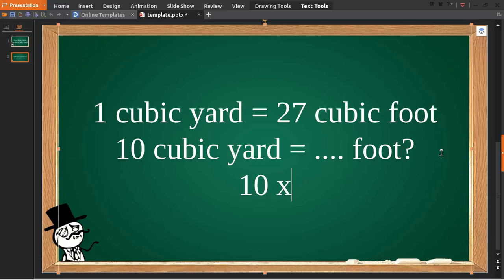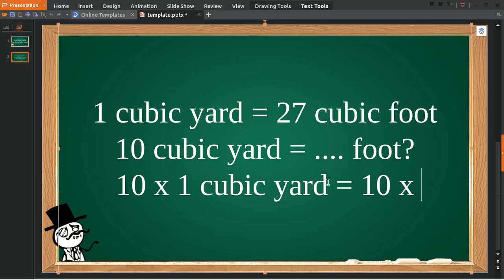Multiply 10 from the 10 cubic yards and you multiply with this number. All right, then give it an equal sign. And then because you have 10 on the left, you must have 10 on the right as well.